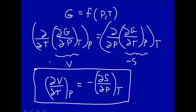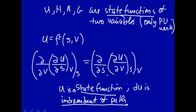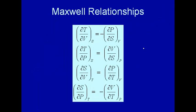You see how those come about? The key point rests on the fact that these functions are state functions. State functions, when you go from initial to final or infinitesimally, are independent of path. So you can go along the first variable and then the second, or along the second and then the first, and get the same thing. And here's a nice summary table of the Maxwell relationships.